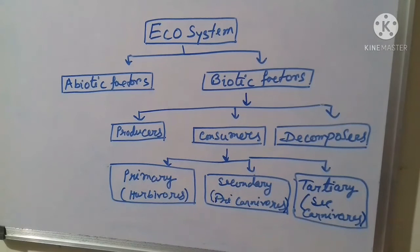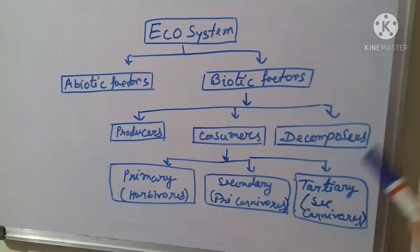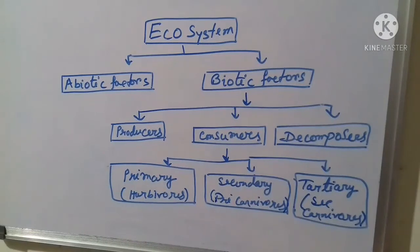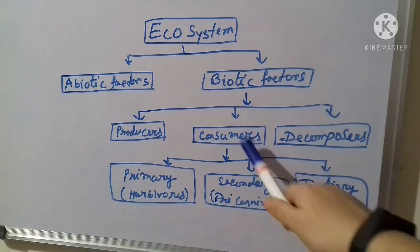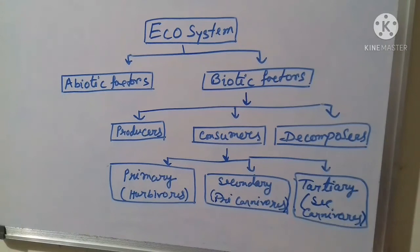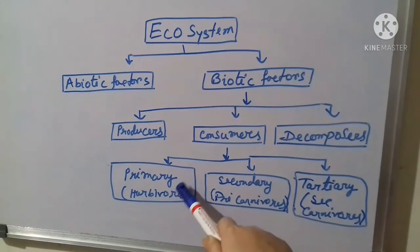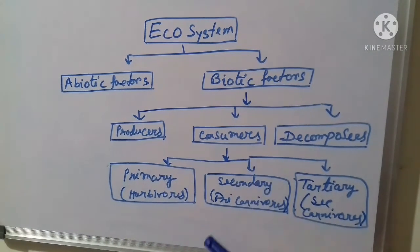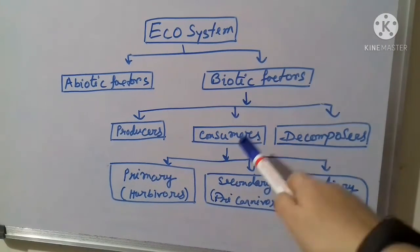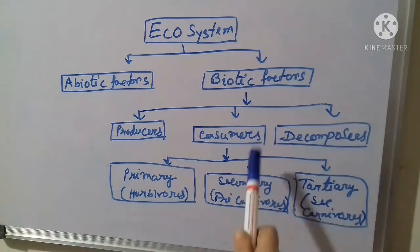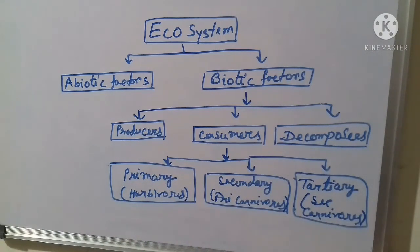The ecosystem is divided into three main parts: producers, consumers, and decomposers. Producers are those who produce their own food and trap energy directly from the sun — that is green plants. Consumers are those who consume the producers as their food. Consumers are again divided into three parts: primary consumers or herbivores, secondary consumers or primary carnivores, and tertiary consumers or secondary carnivores. Herbivores are animals who eat green plants.